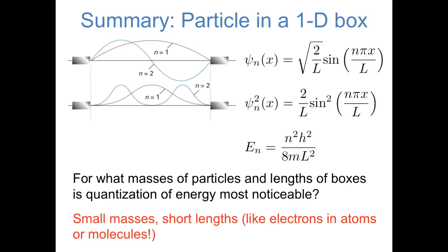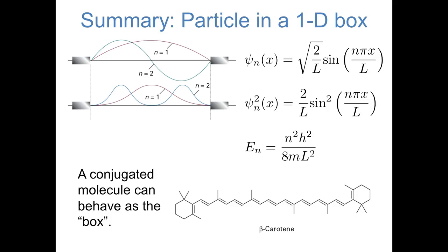But when the particles get even lighter and even smaller — I'm talking about electrons confined to atoms and molecules — then we start to notice the quantization of energy. Only very small masses confined to very small lengths result in energy levels that are far enough apart to notice. Although the particle-in-a-box model is an idealized model, it does have some quantitative predictive value for real systems, particularly the pi electrons in conjugated molecules. A molecule like the one shown at the bottom of the screen is essentially a one-dimensional box for pi electrons to move around in, and it's possible to do a reasonable job predicting the energy differences of pi orbitals using just the particle-in-a-box model.